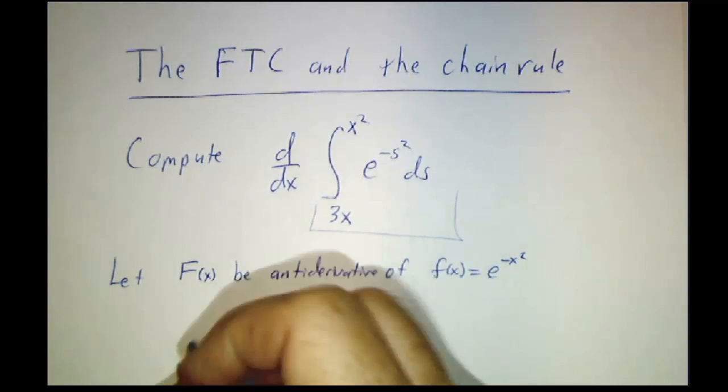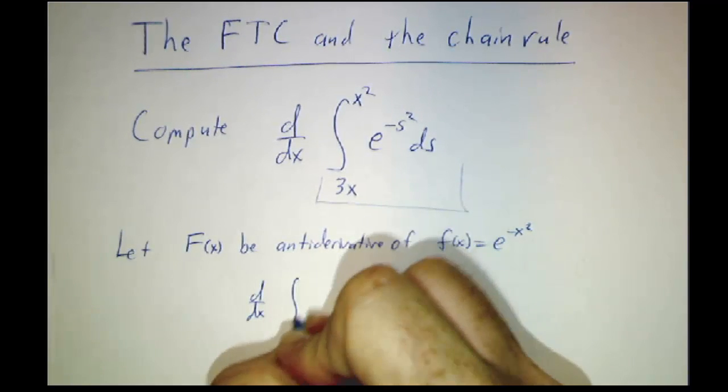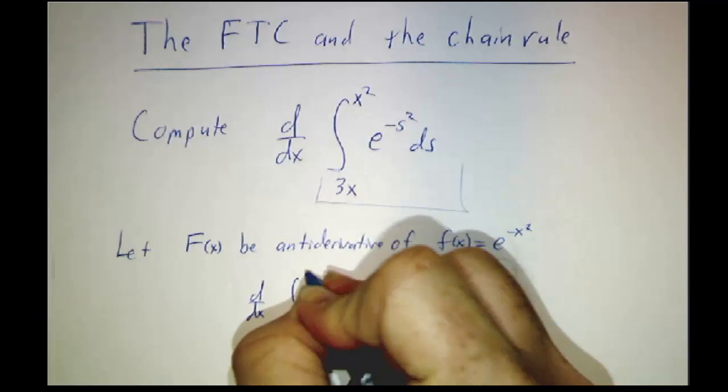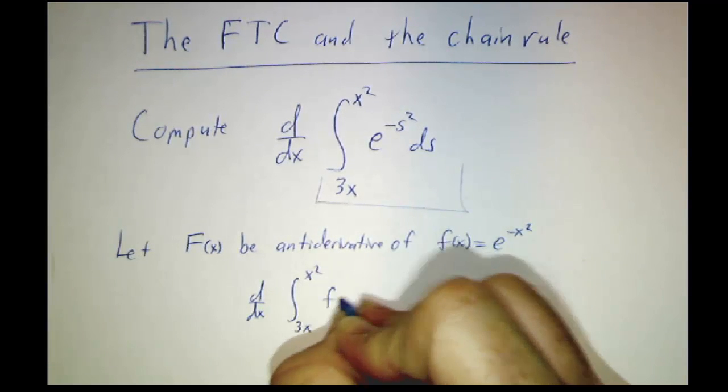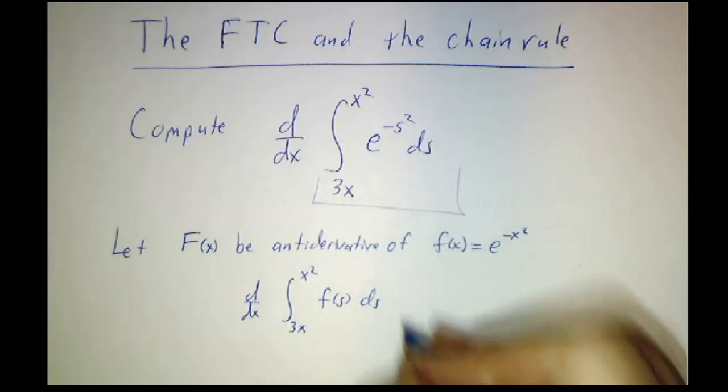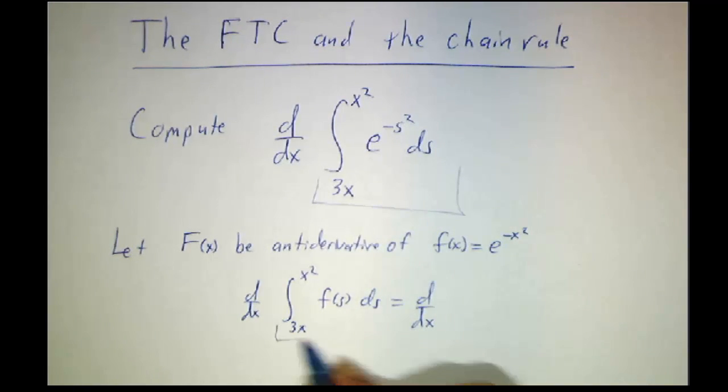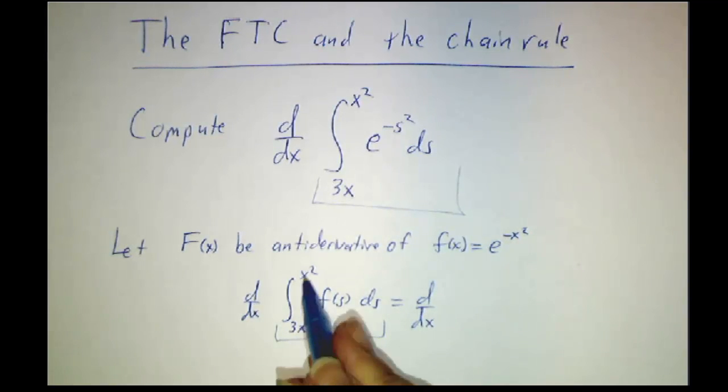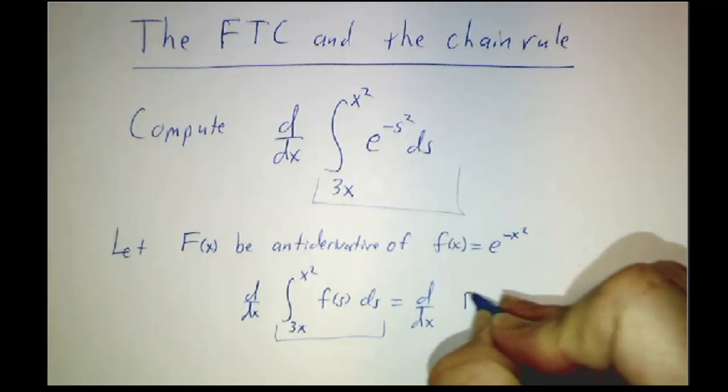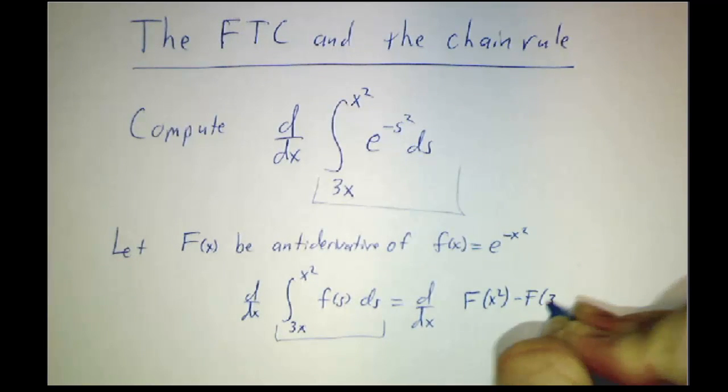So we are trying to take the derivative of the integral from 3x to x-squared of f ds. And that's the derivative where we use the second fundamental theorem of calculus and say to do this integral from 3x to x-squared, we just take big F of x-squared minus big F of 3x.